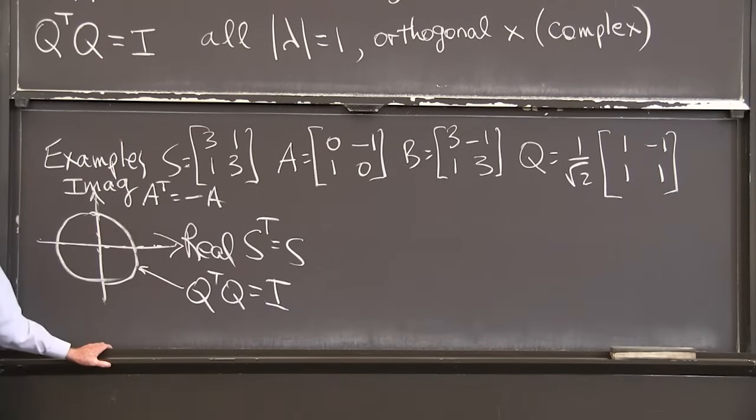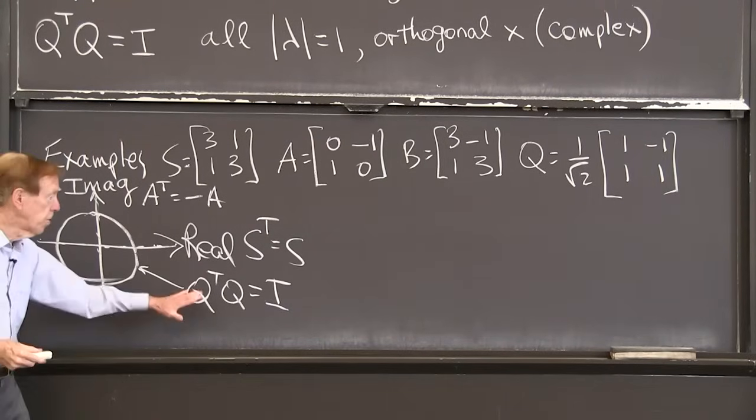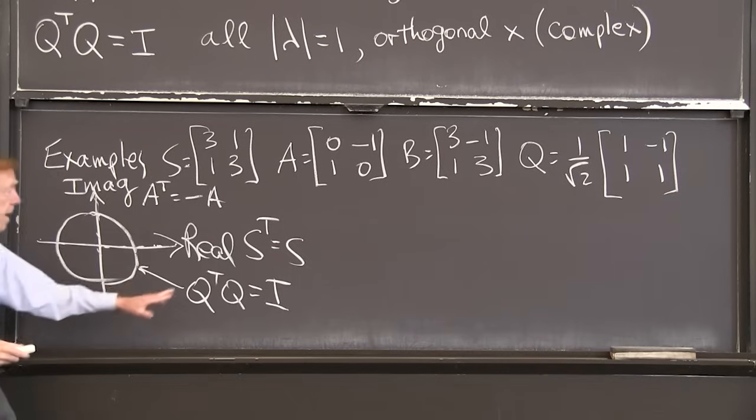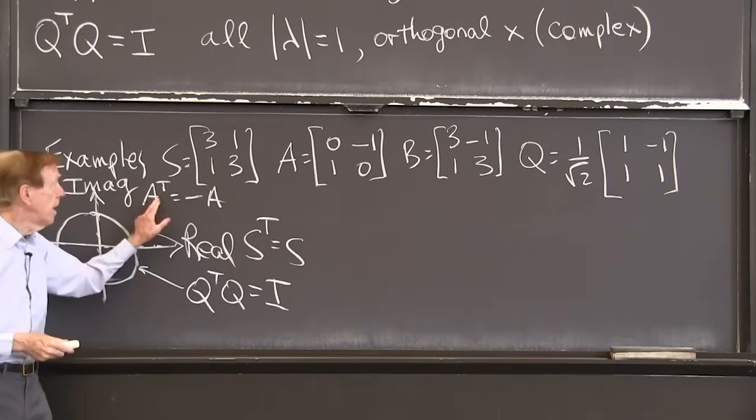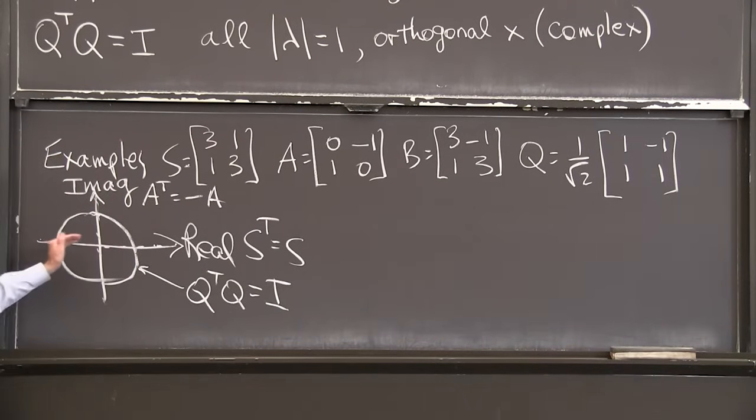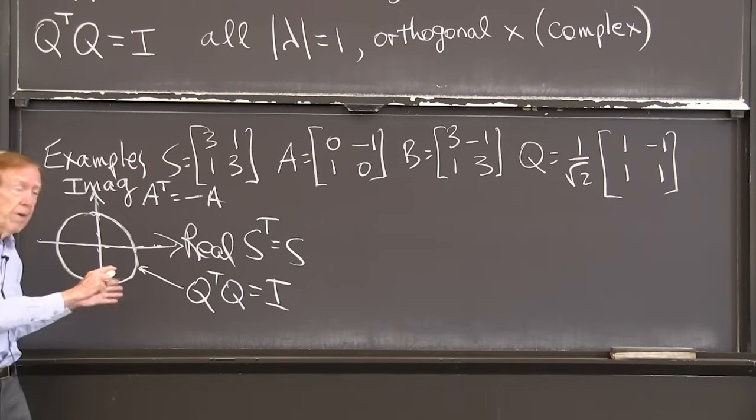They're on the imaginary axis when A transpose equals minus A. And they're on the unit circle when Q transpose Q is the identity. Q transpose is Q inverse. You see the beautiful picture of eigenvalues, where they are. And the eigenvectors for all of those are orthogonal.